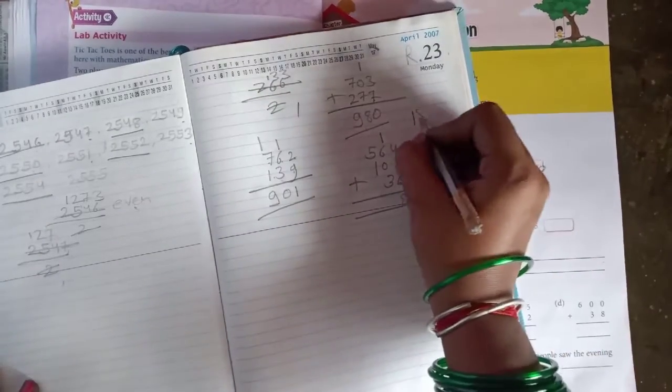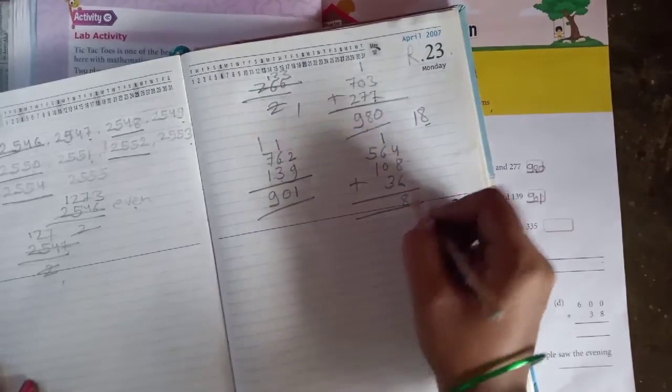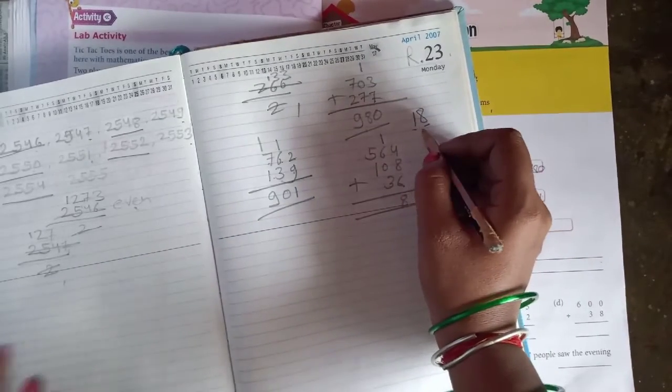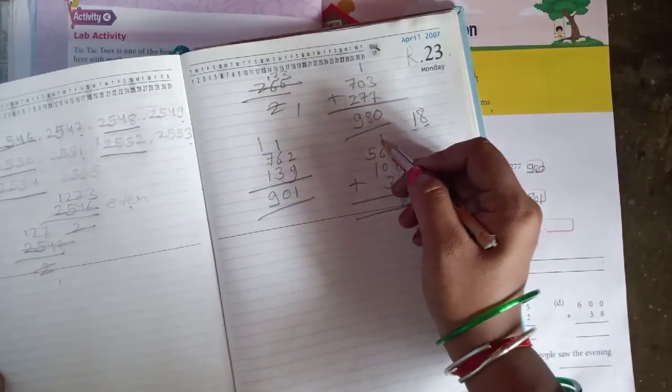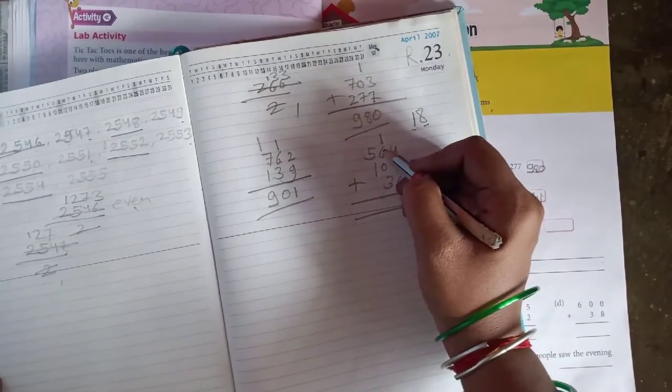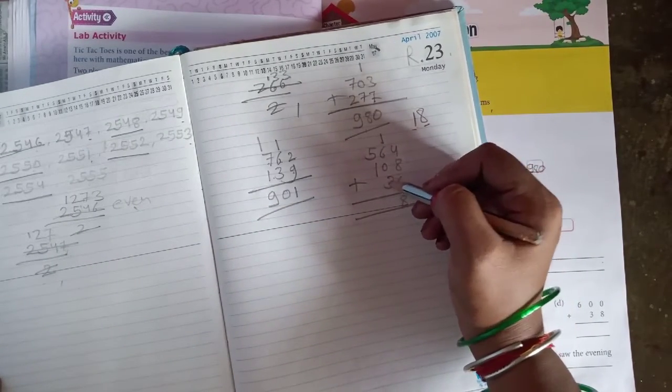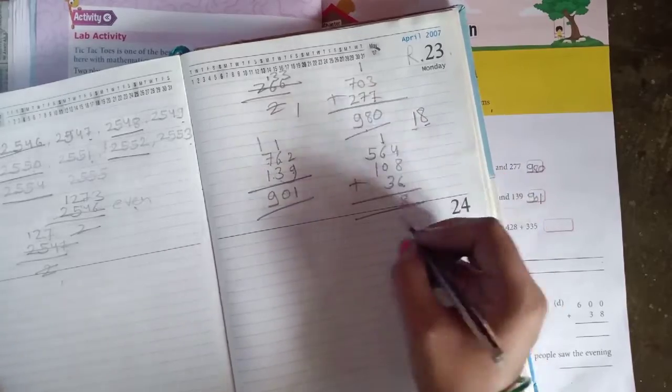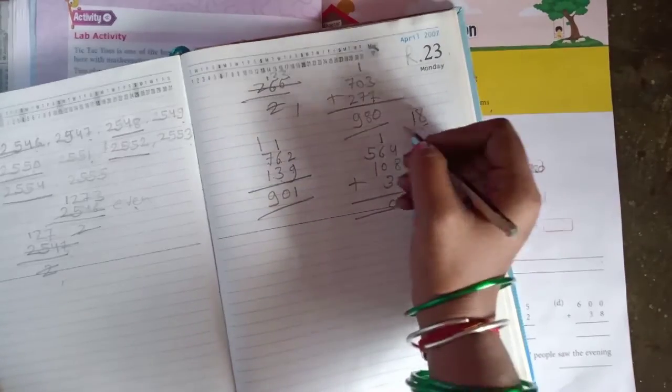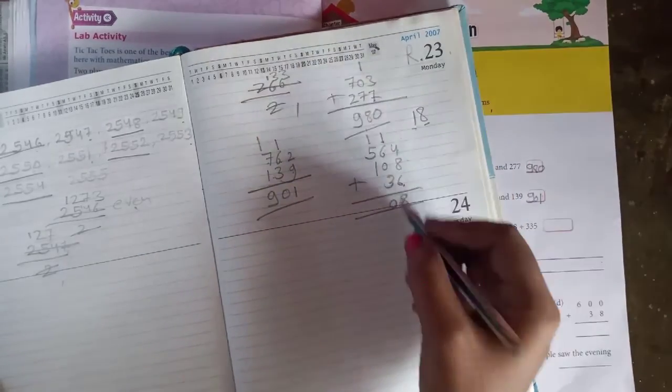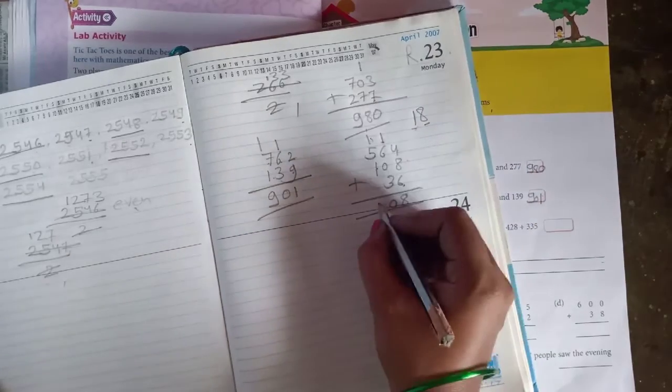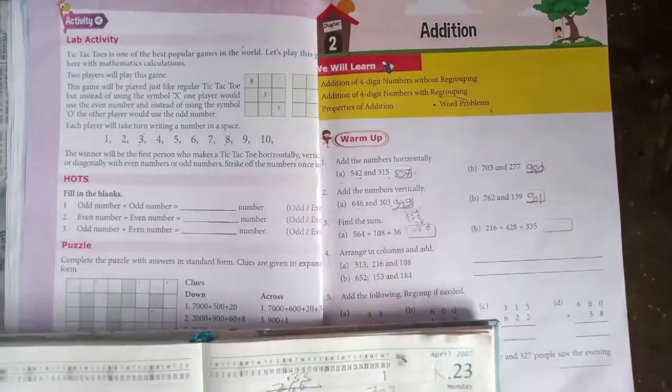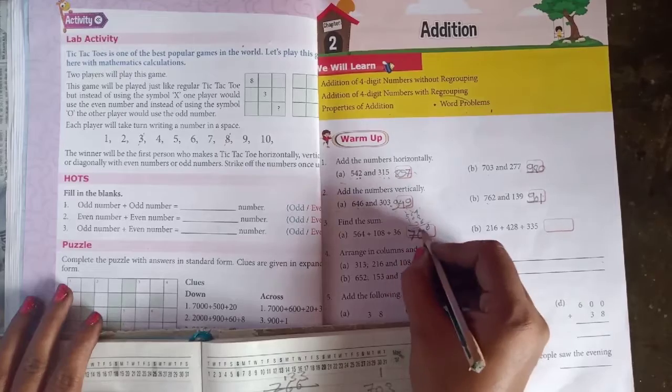18, there is always write it here and the other number in the left side it will be going there. So 6, 7, 8, 9, 9 plus 1 is 10, 0 is here and 1 is here. So 5 plus 1: 6, 7, 0, 8. So answer is 708, understood.